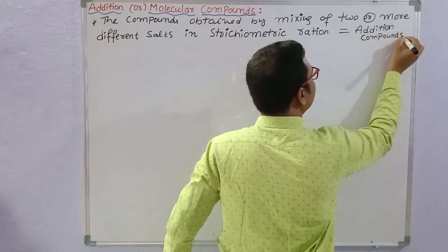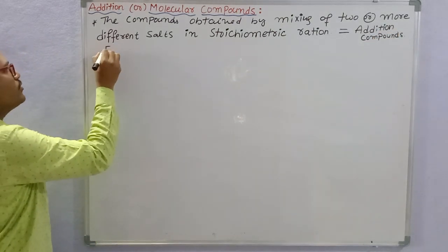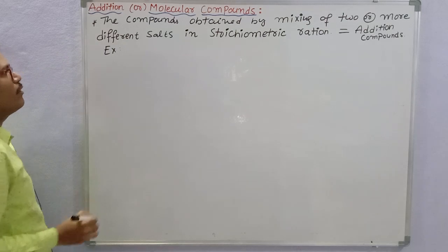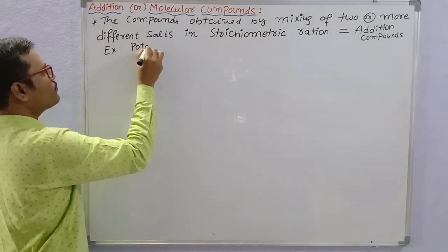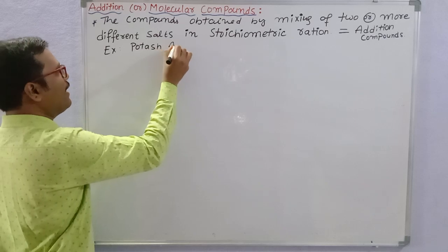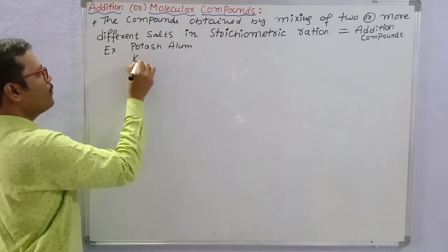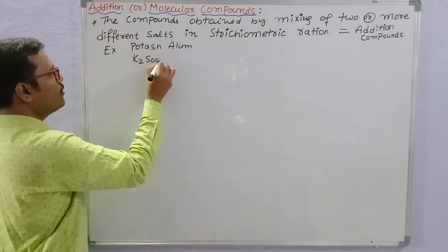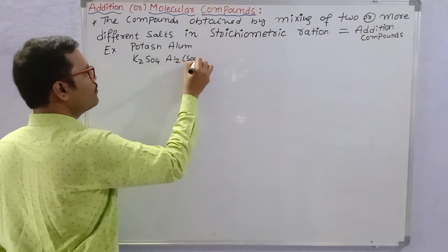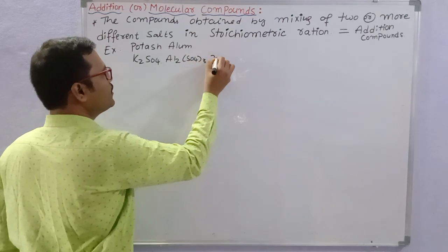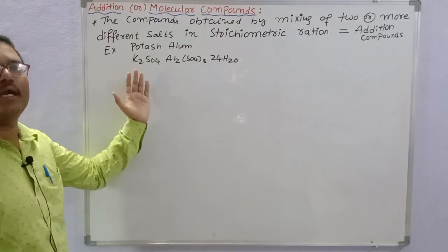What are the simple examples for addition compounds? We have two simple examples. The first example is potash alum. The formula for potash alum is K₂SO₄·Al₂(SO₄)₃·24H₂O. This is the first example for an addition compound.